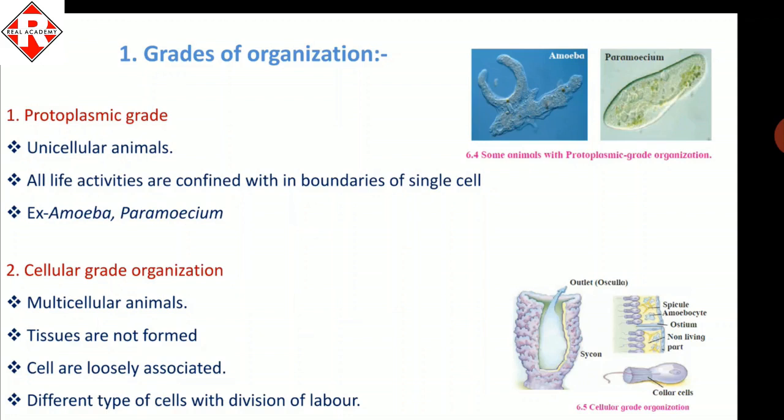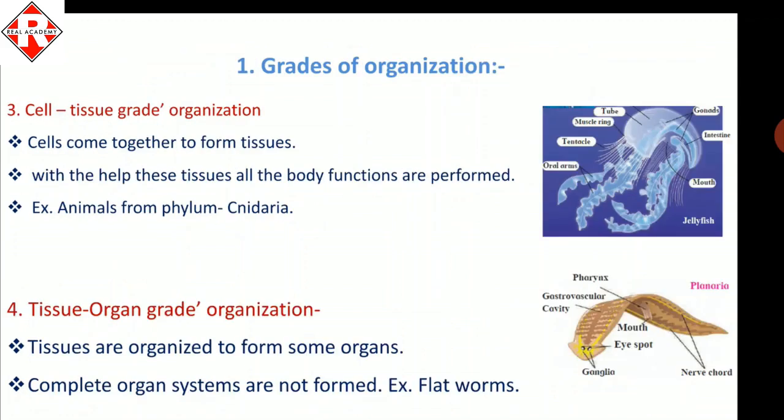The second type is cellular grade organization. This animal is multicellular, but tissues are not formed. Cells are loosely associated, and different cells have different tasks to perform — they carry out life processes independently. Examples are organisms in phylum Porifera.